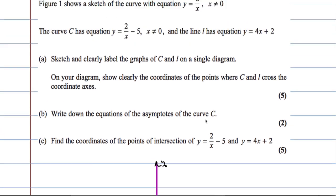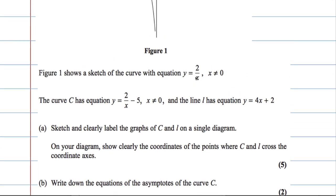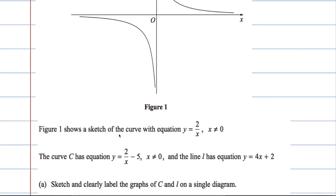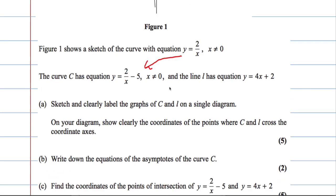So let's start with the curve C. Now, we know that the figure given, we're given a reciprocal function like so. And we're asked to sketch y equals 2 over x minus 5. So there is a relationship between these two. And if you know your transformations of functions, you should know that this curve is just going to be the first curve shifted down by 5 units.